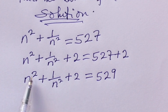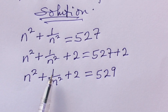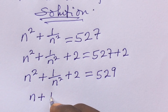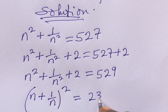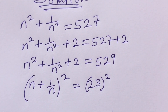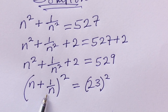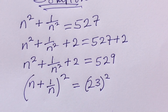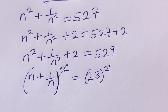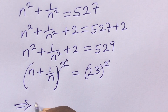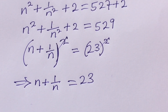We can now rewrite both sides using binomial expansion. The left-hand side becomes (n + 1/n)², and the right-hand side is 23². Since both sides are perfect squares, the squares cancel out, giving us: n + 1/n = 23.